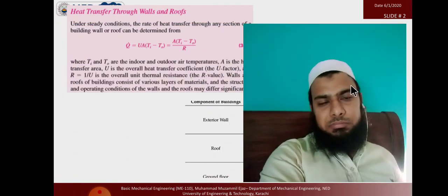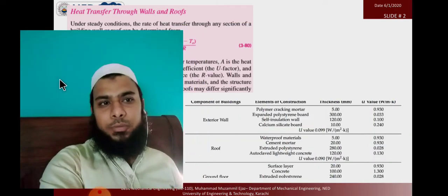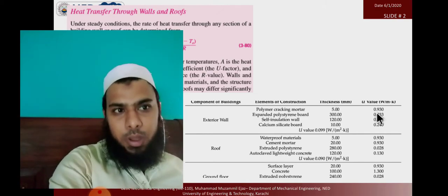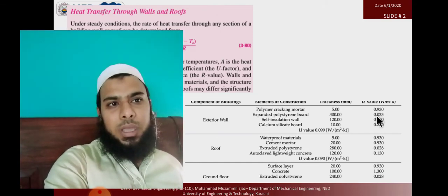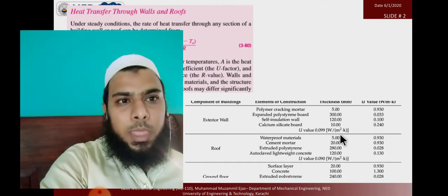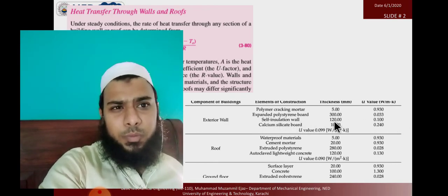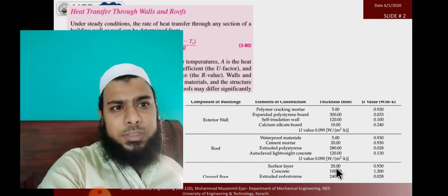Let's work through a numerical example left from the previous lecture to give you a better understanding of U-value and thermal resistance. When we sum up all the equivalent thermal resistances of different materials, we can easily calculate the U-value and the heat transfer rate. For example, polymer cracking mortar has a U-value of 0.93, salve insulation wall is 0.1, calcium silica board is 0.20, waterproof roofing material is 0.9, autoclave lightweight concrete is 0.130, and ground level surfaces have different U-values with respect to different thicknesses.